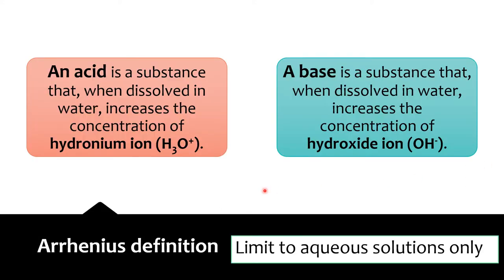Let's look at the first one — the Arrhenius definition. Arrhenius was the first person to identify substances as acids or bases. He looked at substances that dissolve in water. The important aspect of this definition is that it is limited to aqueous solutions only. Arrhenius defined an acid as a substance that dissolves in water and increases the concentration of hydronium ion, and a base as a substance that dissolves in water and increases the concentration of hydroxide ion.